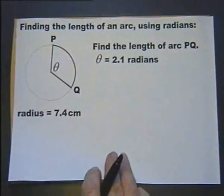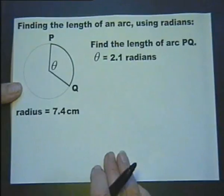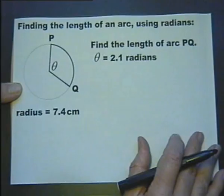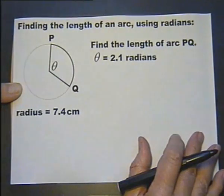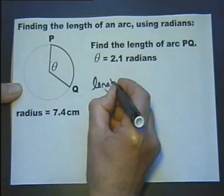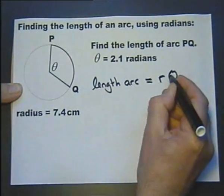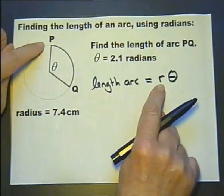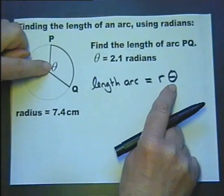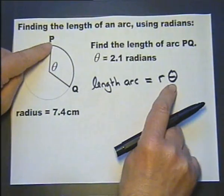Let's move on to finding the length of an arc using radians. Now in fact this is so simple as to be rather unbelievable, and it's easily forgotten because it's so simple. Finding the length of an arc using radians, and this is all you've got to learn. The length of an arc using radians is this formula, where r is the radius of the circle and theta is the size of the angle as long as it's measured in radians. So the length of this arc PQ is the radius of the circle multiplied by the angle measured in radians.